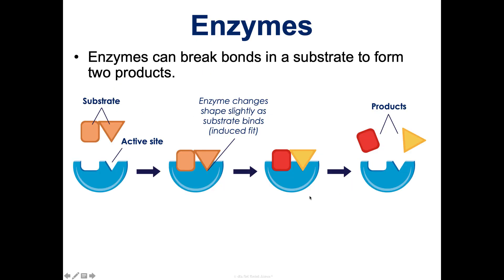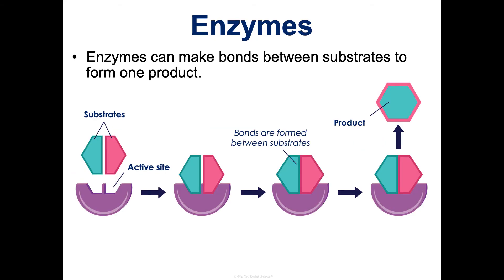Enzymes can facilitate the breaking of bonds in the substrate to form two products. Enzymes can also facilitate the formation of bonds between two substrates to make one product. So an enzyme can facilitate catabolic or anabolic reactions — it doesn't matter.